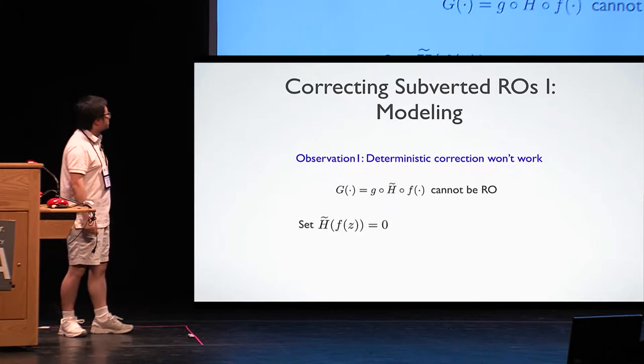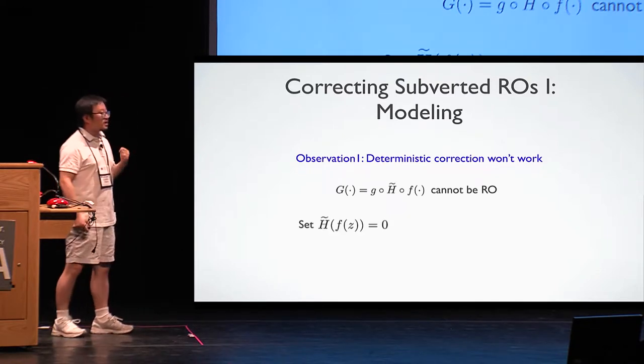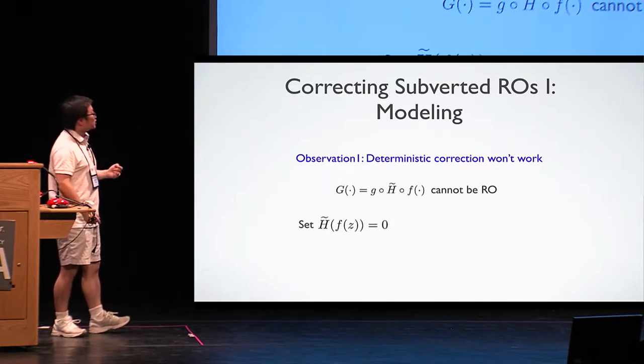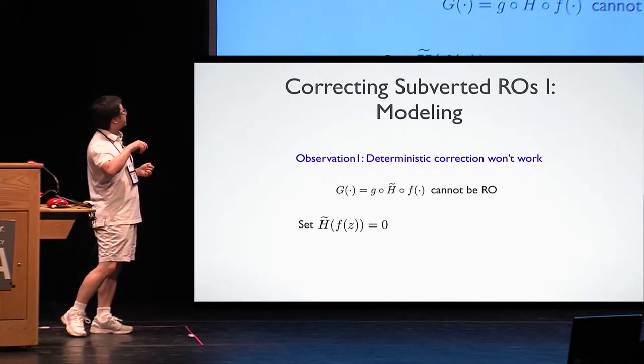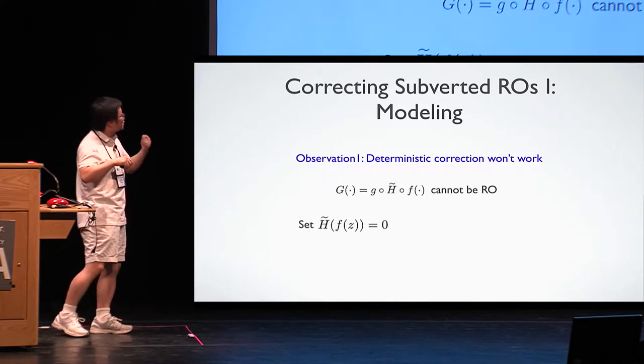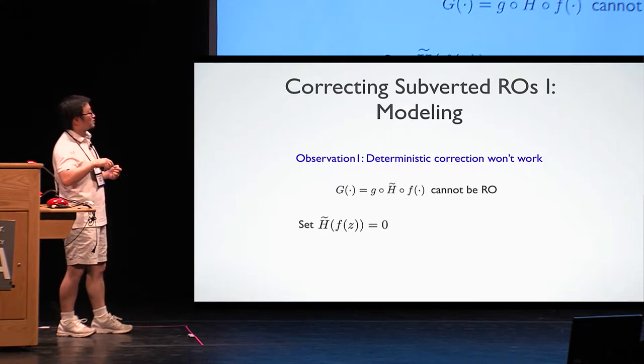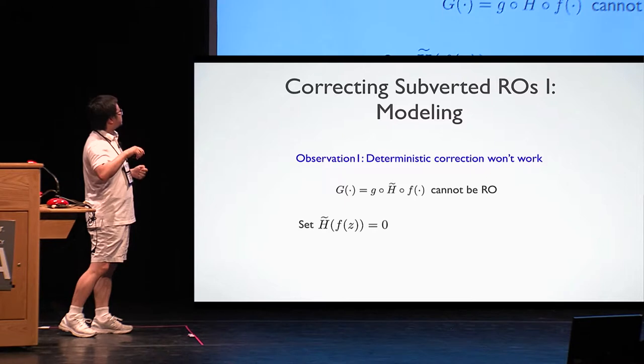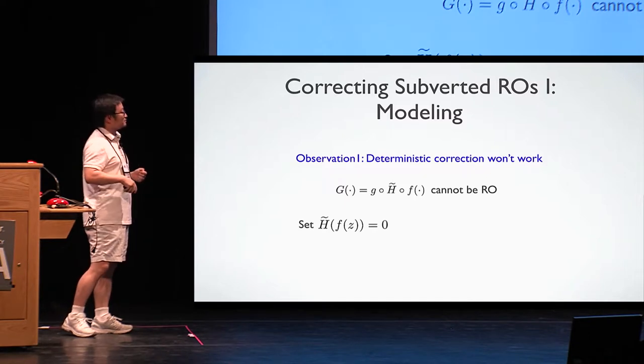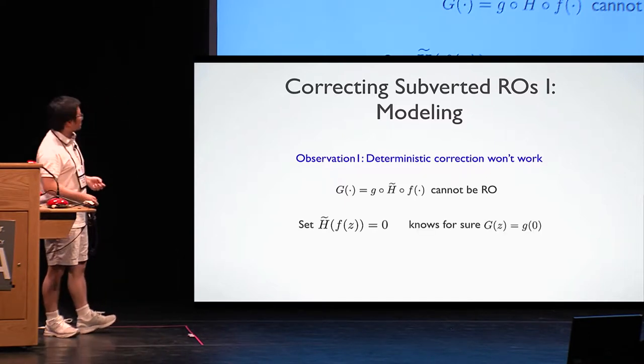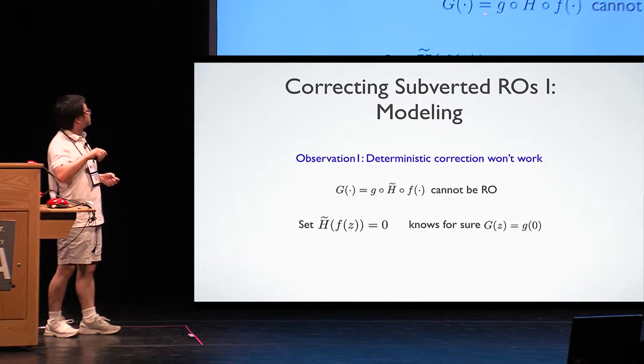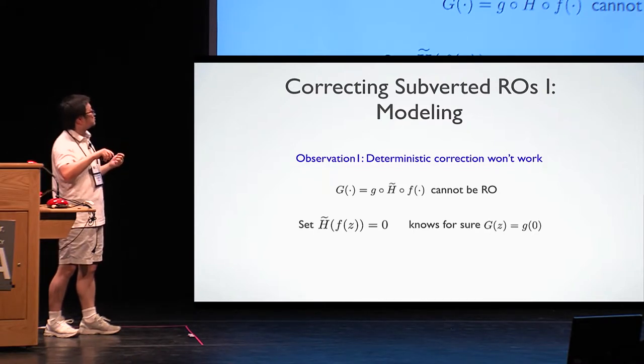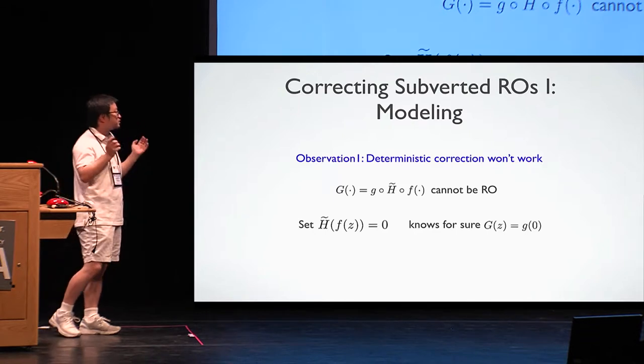But our claim, this can never be a random oracle. The attack is pretty simple. So the attacker is going to plant the trigger in a different way. Instead of directly putting the backdoor Z at the hash implementation, he's going to choose a backdoor, but evaluate F first. Then plant this value as a trigger of H tilde. Now, it's very easy. The attacker knows for sure when the capital G evaluated at this backdoor point Z, it can always be equal to G(0). It's fully predictable to the adversary.